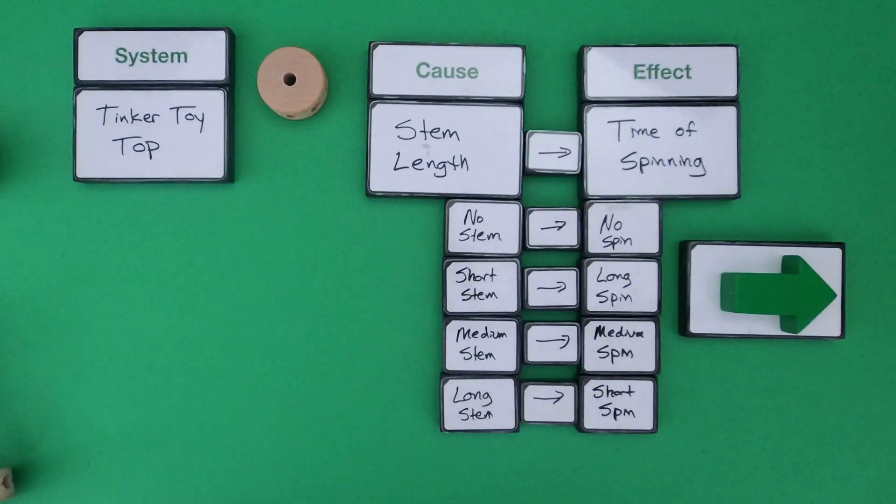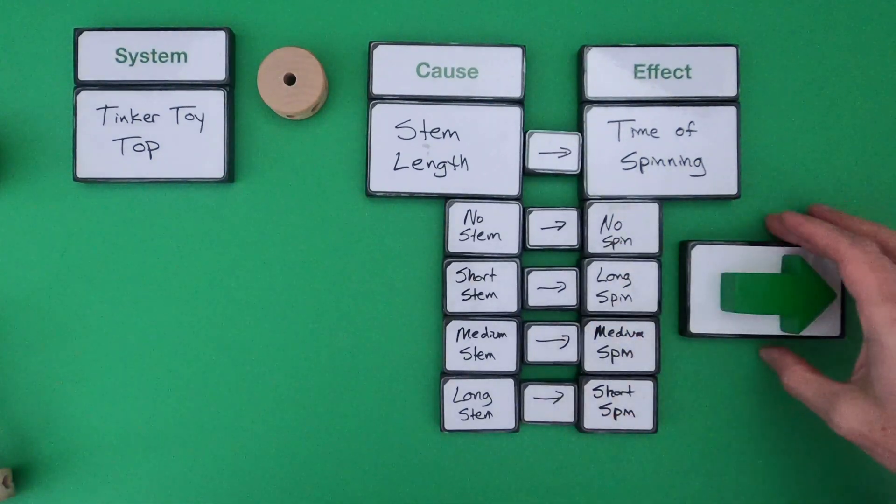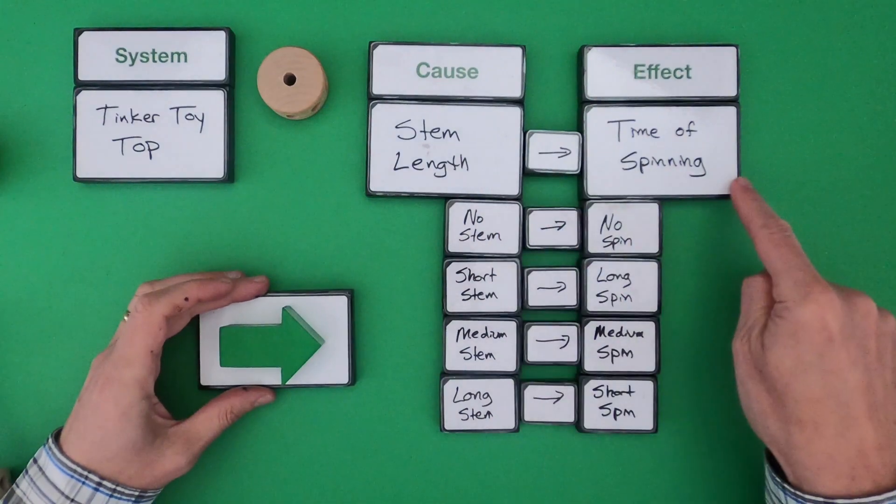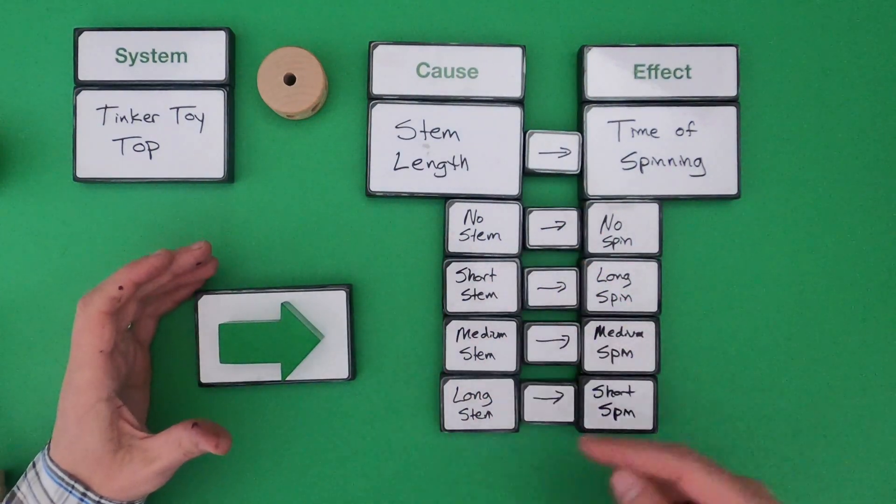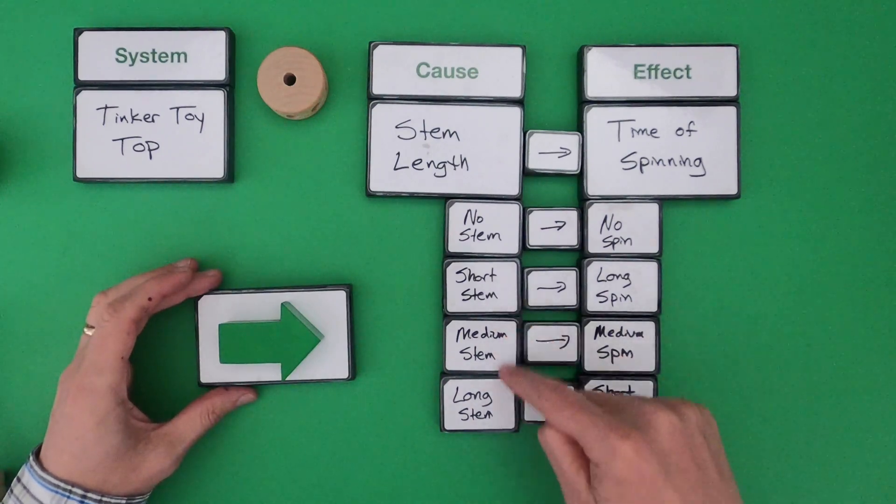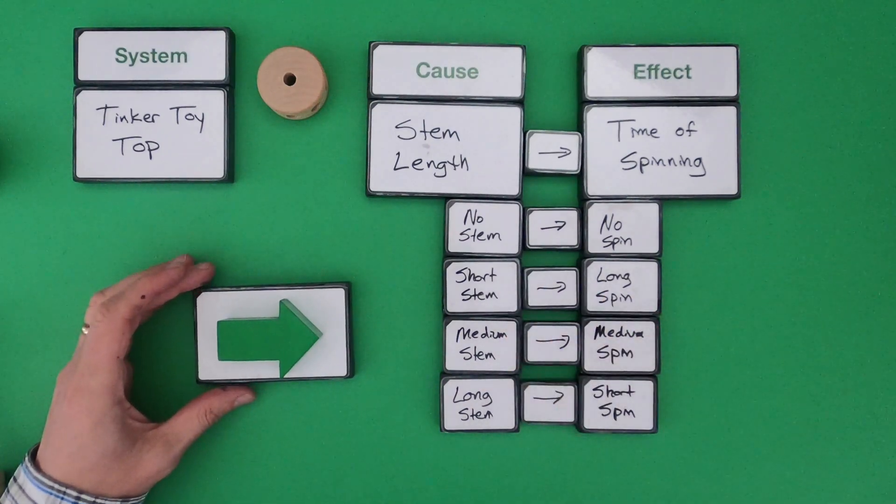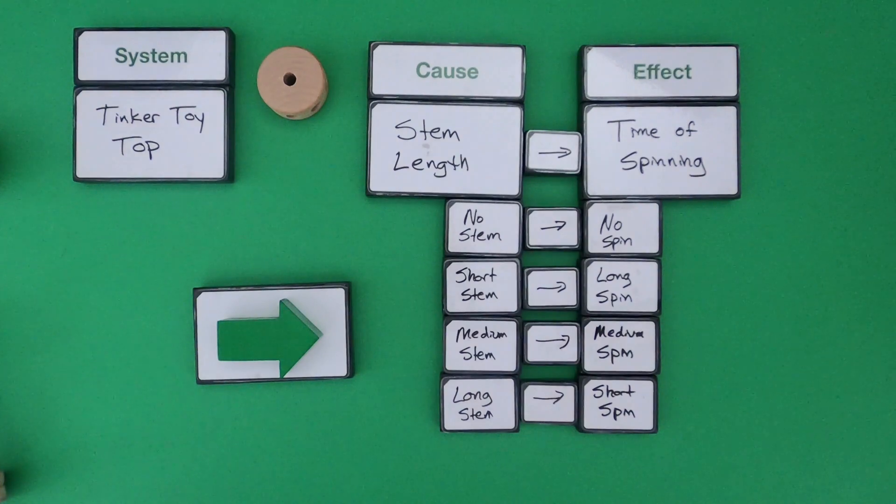You can see based on the data that I've collected, if I were to say what's the relationship between stem length and time of spinning, a stem is important for spinning but the shorter the stem is, the longer the spin is. That would be the relationship between that cause and the effect.